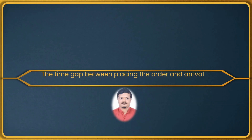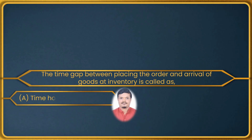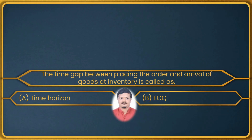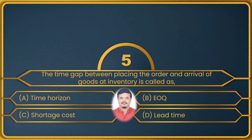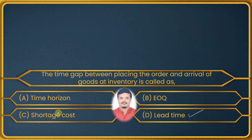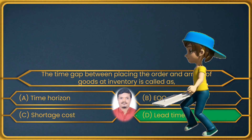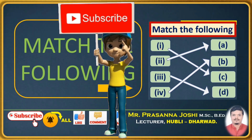Next question: the time gap between placing the order and arrival of goods at inventory is called — time horizon, EOQ, shortage cost, or lead time. This is from the inventory chapter. The time gap between placing the order and arrival of goods is called lead time, not EOQ, time horizon, or shortage cost. The right answer is lead time.